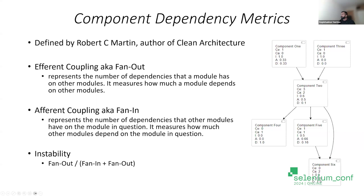Component dependency metrics are defined by Robert C. Martin, the author of Clean Architecture. If you've read Clean Architecture, you would see there are efferent coupling and afferent coupling — also known as fan-out and fan-in. These terms help us understand how our components or modules are dependent on each other. Efferent coupling, also known as fan-out, represents the number of outgoing dependencies a module has on other modules — for example, the controller has a dependency on the service.